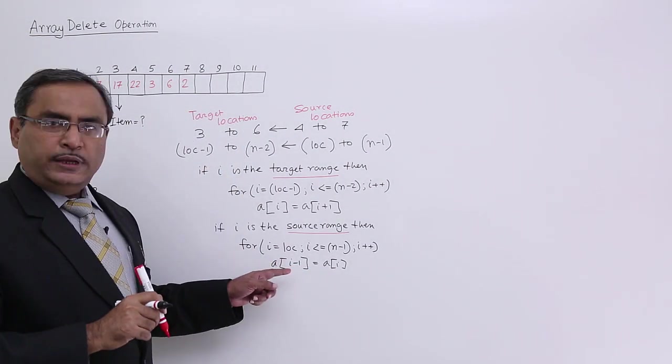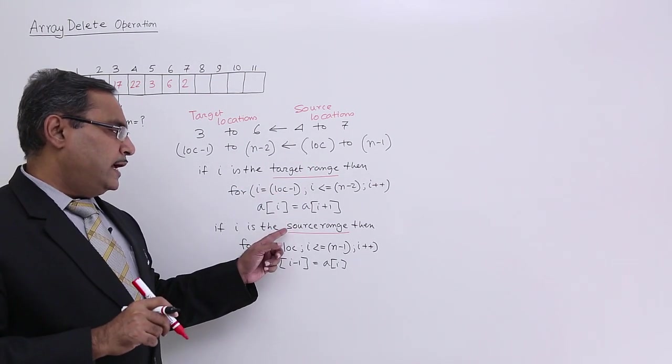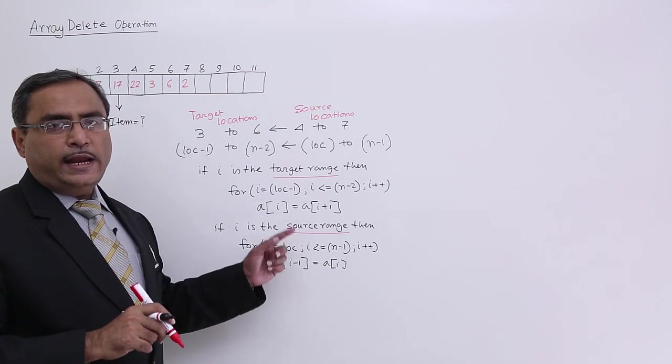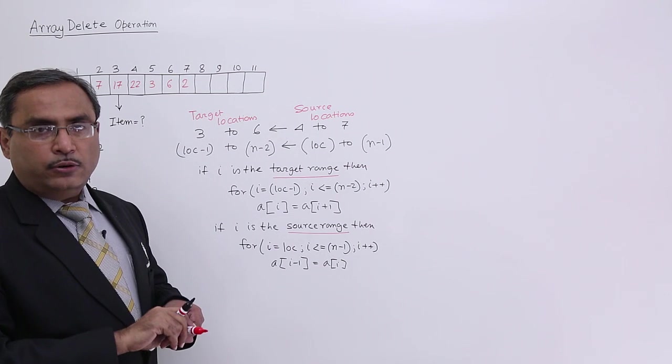So in this way, considering either i is equal to target range or considering i as the source range, I can write any one of the four bodies, four constructs. Okay, let me write the algorithm now.